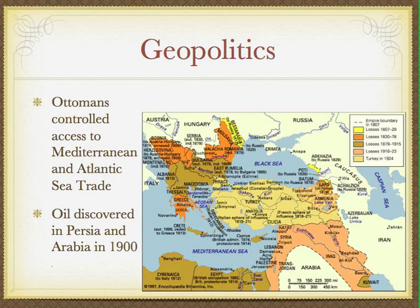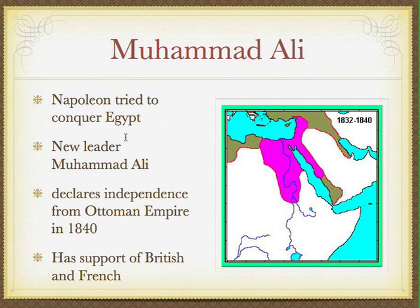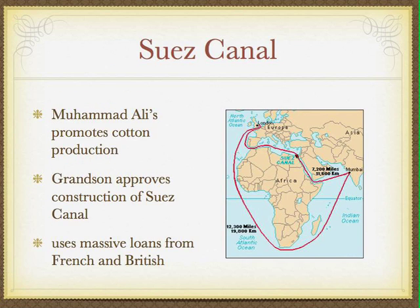The first example of the Ottomans losing land was Egypt. Napoleon tried to conquer Egypt around 1798, where he was defeated by Horatio Nelson. A new leader, Muhammad Ali, was sent by the Ottoman Empire to reorganize the region, but he actually declared independence from the Ottoman Empire in 1840, with British and French support. He came to control Egypt, part of Sudan, part of Arabia, and territory reaching into Turkey. Europeans wanted to control this area in order to build the famous Suez Canal.